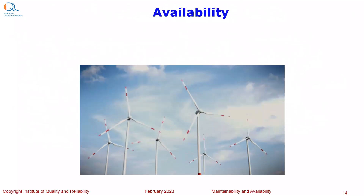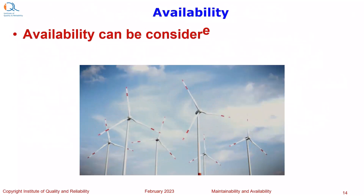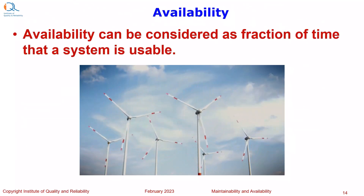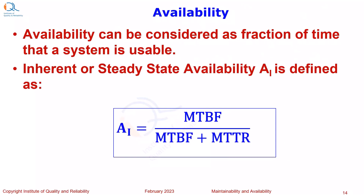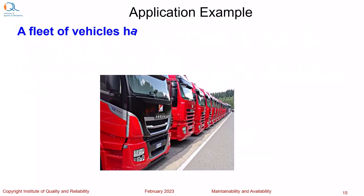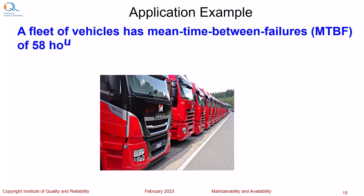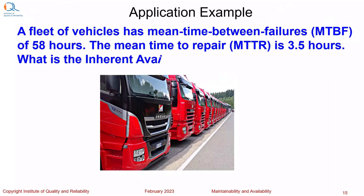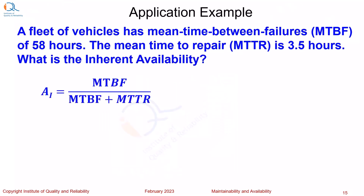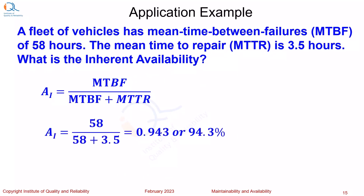Another commonly used term is availability. Availability can be considered as the fraction of time that the system is actually usable. Inherent or steady-state availability AI is defined as mean time between failures divided by mean time between failures plus MTTR. For a simple application example: a fleet of vehicles has MTBF of 58 hours and MTTR of 3.5 hours. The inherent availability is calculated as 58 divided by 58 plus 3.5, which equals 94.3%.